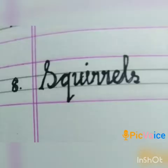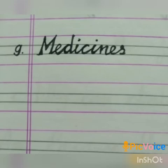Eighth one: Squirrels. Squirrels eat fruits and vegetables. Ninth one: Medicines. Medicines are substances used to treat illness and keep us healthy.